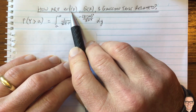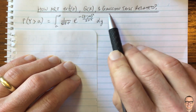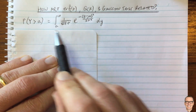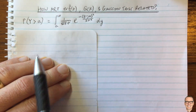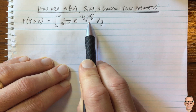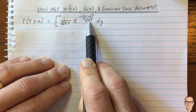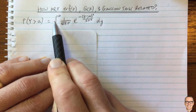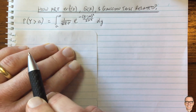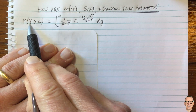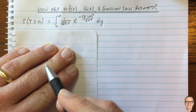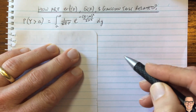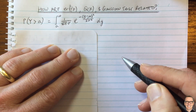How are the error function, the Q function, and Gaussian tails related? Here's the equation for a Gaussian tail for a general Gaussian that has a mean of mu and a variance of sigma squared. This is the Gaussian probability density function, and here we're integrating from a to infinity. This gives us the probability that our outcome will be bigger than a value a. This comes up in digital communications, hypothesis testing, or data classification.